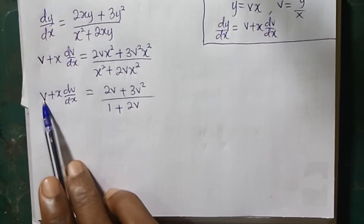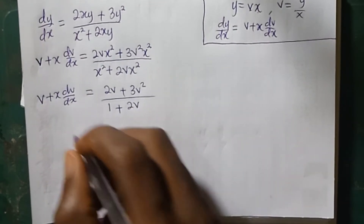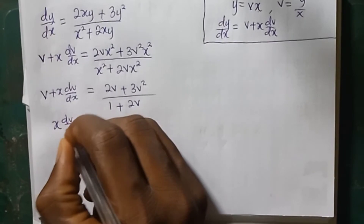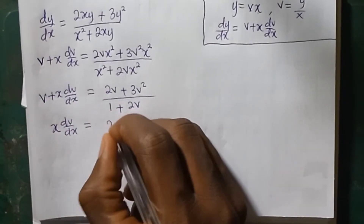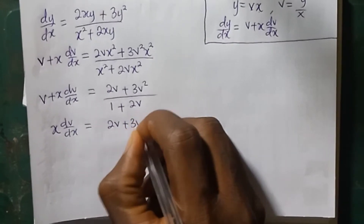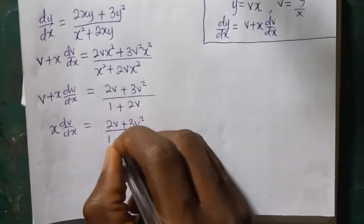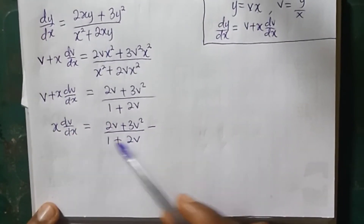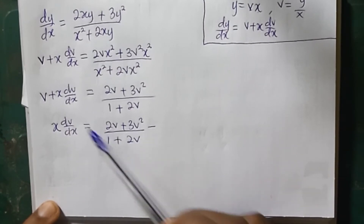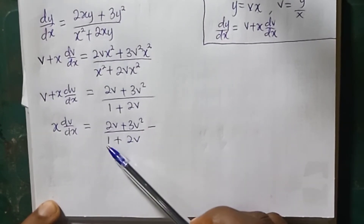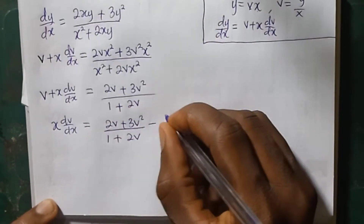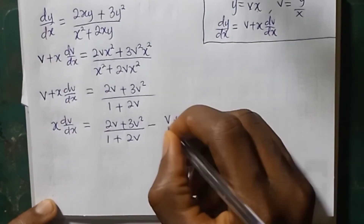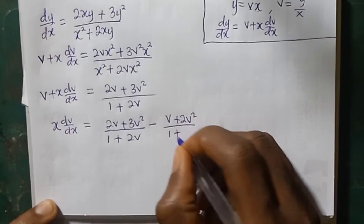Next, we are going to take v to the right-hand side. On the right-hand side, we have 2v plus 3v squared divided by 1 plus 2v, minus v. To ensure we have a common denominator, we multiply v by 1 plus 2v, giving v times 1 which is v, plus v times 2v which is 2v squared, all divided by 1 plus 2v.